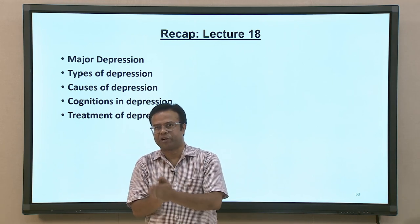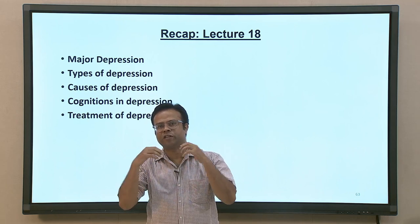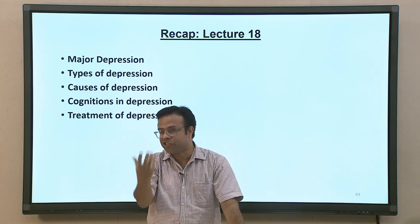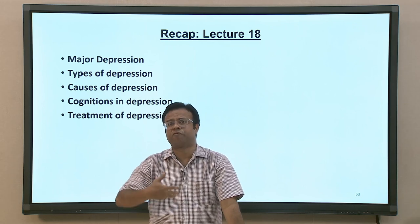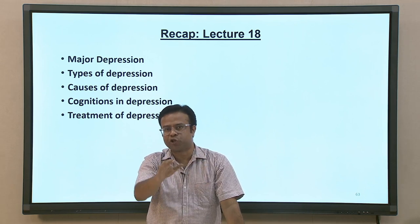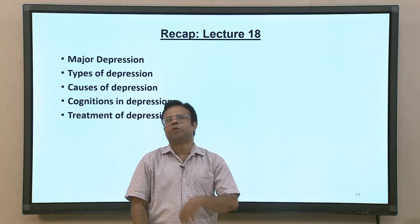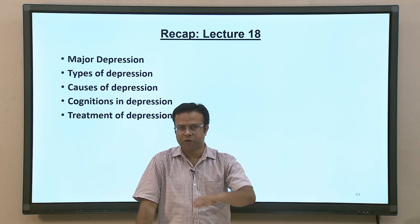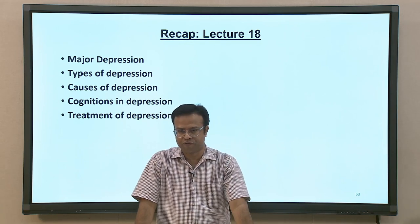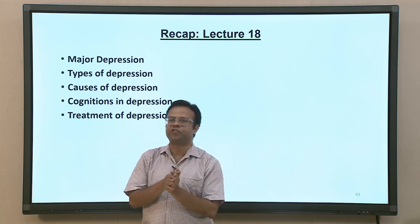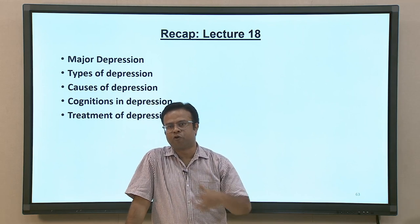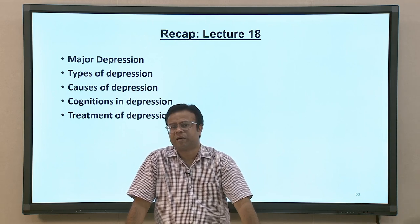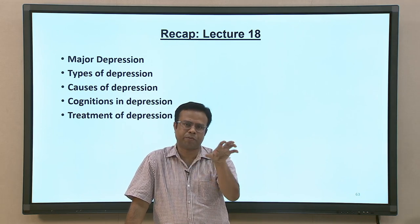We also discussed cognitive aspects of depression — how thoughts become more irrational, how explanatory style becomes more pessimistic, the concept of learned helplessness, and rumination as thought processes connected to depression. At the end we discussed various treatments available for depression, including cognitive therapies, pharmaceutical drugs, and some extreme treatment options.